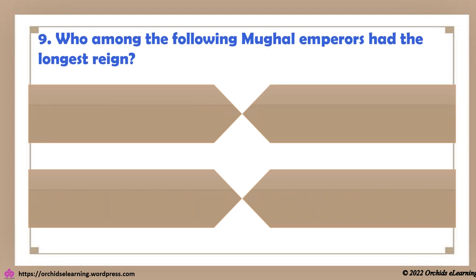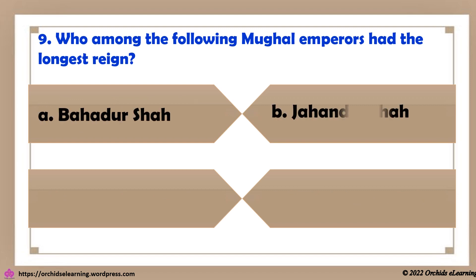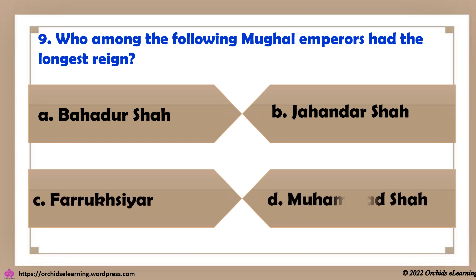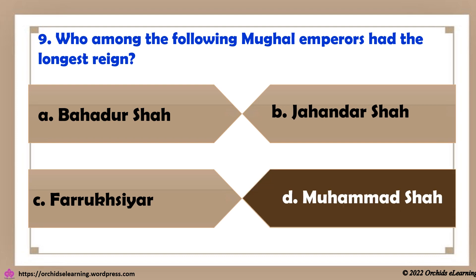Who among the following Mughal emperors had the longest reign? The answer is D: Muhammad Shah.